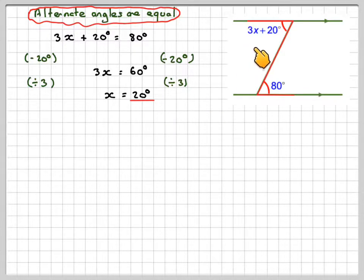Going back we could actually find the value of that angle, we know it's actually 80. We can see that 3 times 20 is 60 plus 20, that makes 80, so they are equal.